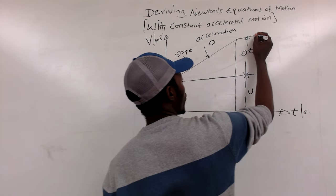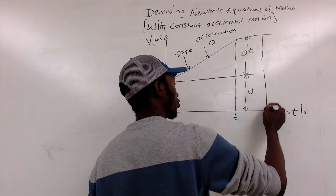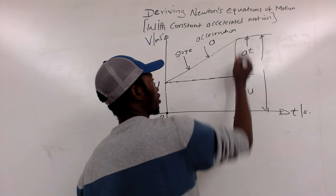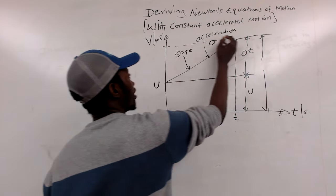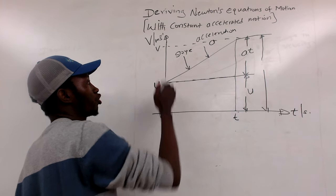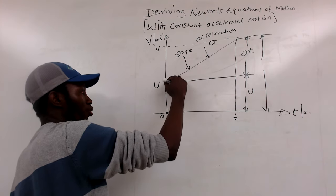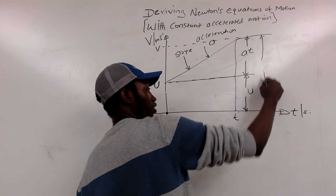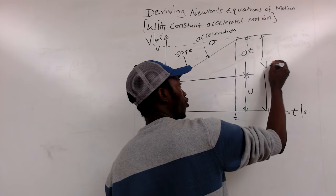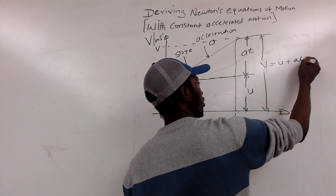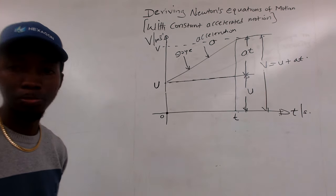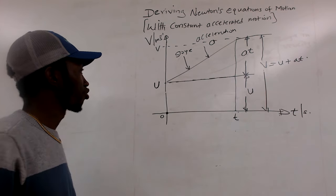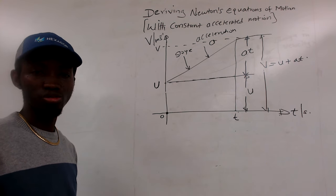The final velocity from the starting point to the ending point — which we refer to as v — is going to be this value plus this value. This value is at and this value is u, so therefore v equals u plus at. This is how we get the first equation of motion, simple and straightforward.